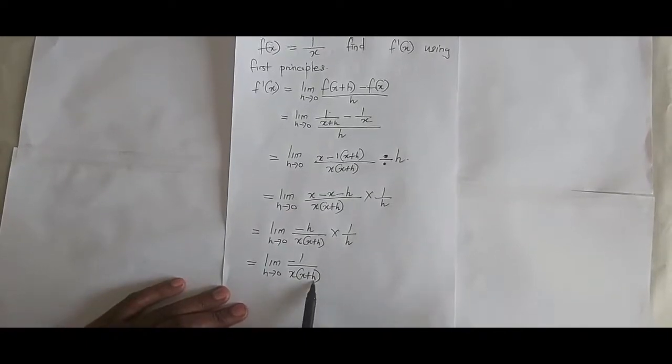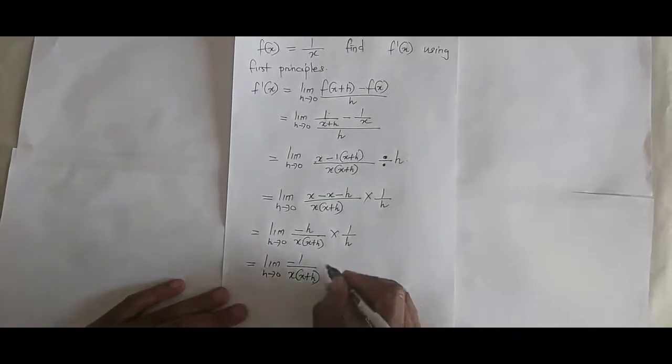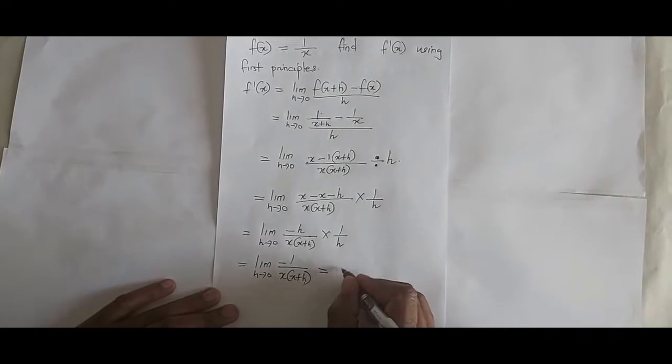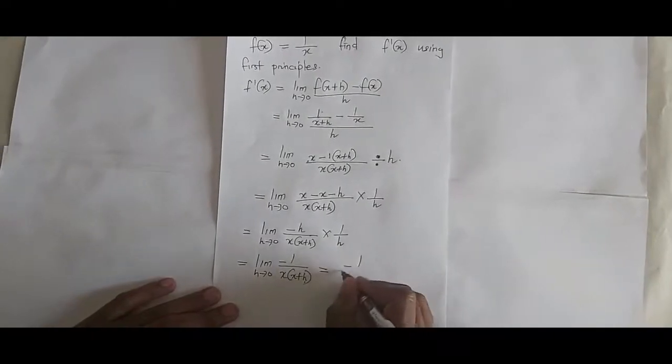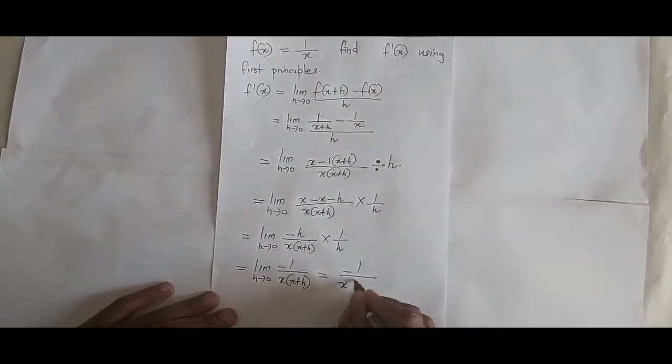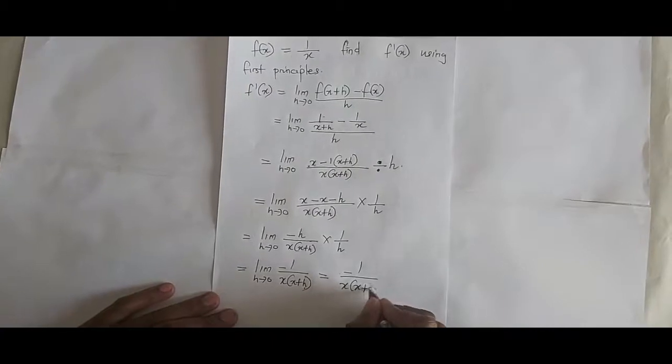Then eventually h becomes 0, which now means it will be equal to minus 1 all over x into x plus 0.